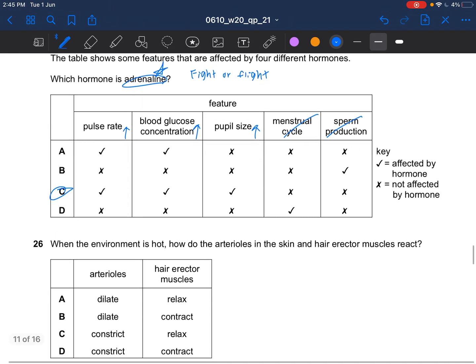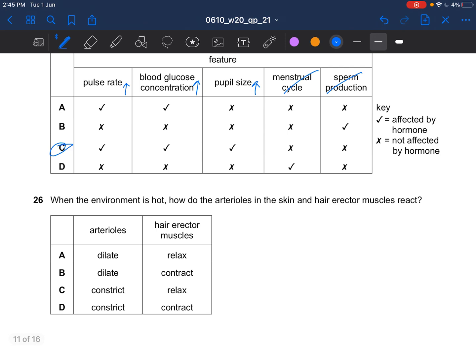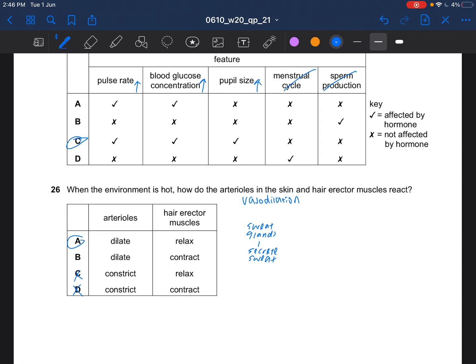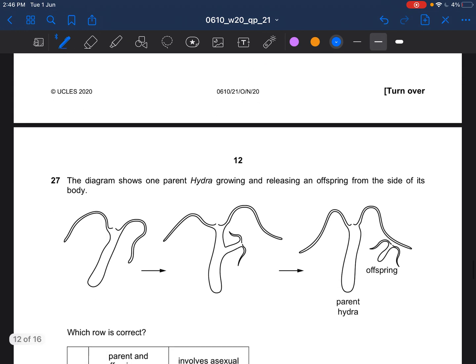Next question. When the environment is hot, how do the arterials in the skin and hair erector muscles react? When environment is hot, vasodilation will occur, which means your arterial would widen, it would dilate. And your hair erector muscle would relax. When your hair erector will relax the hair will lie flat, it will enhance insulating the layer of air trapped above skin. When the environment is hot your sweat glands would also secrete sweat and then the water would evaporate. So the answer for question 26 is A.